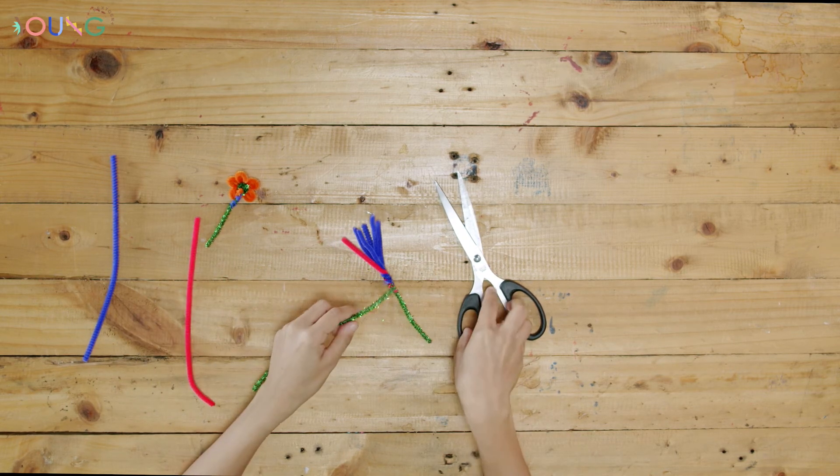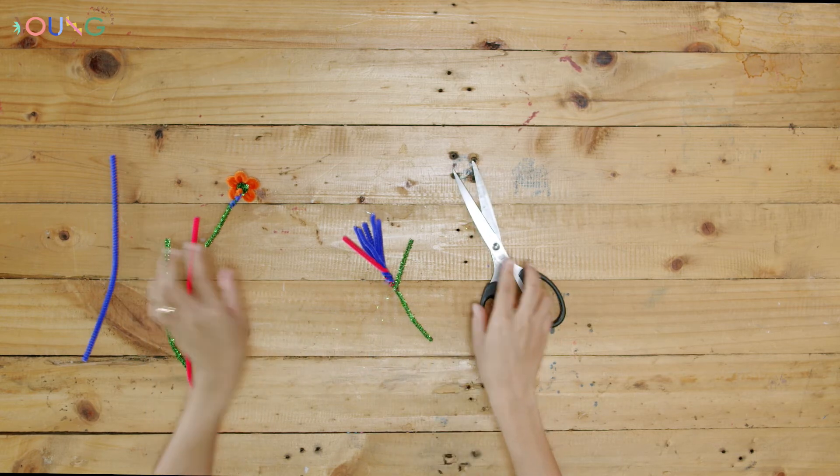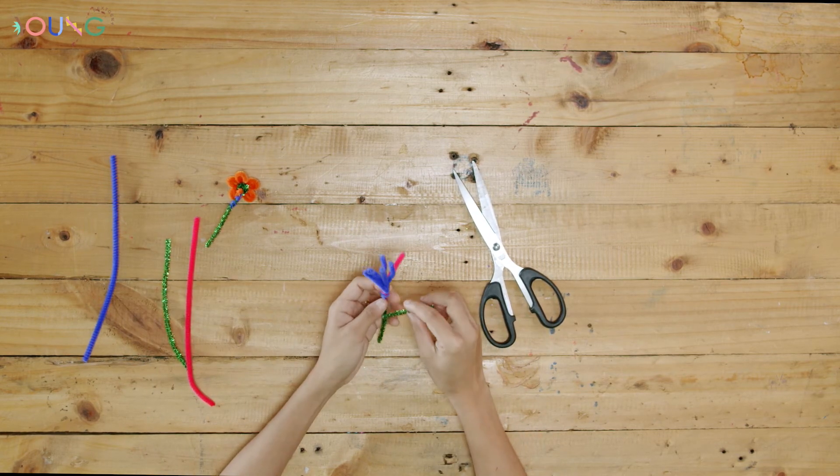And then, cut a short piece of green and wrap it around your flower just like this.